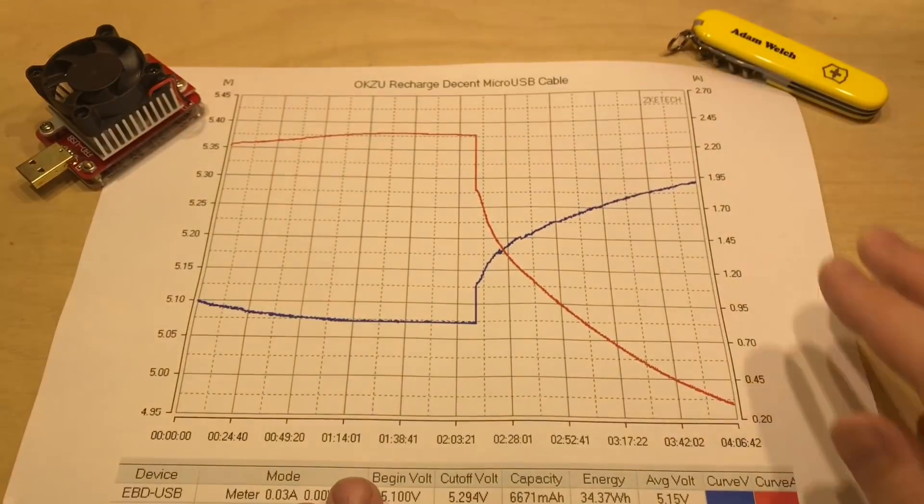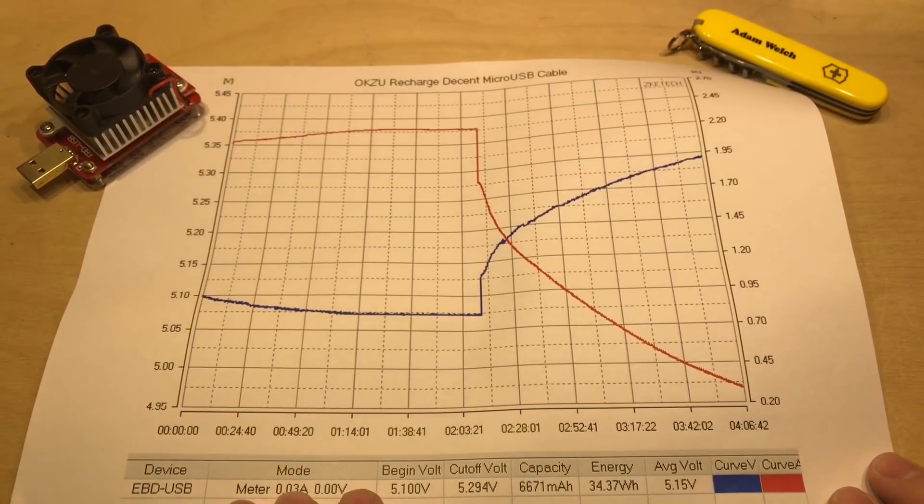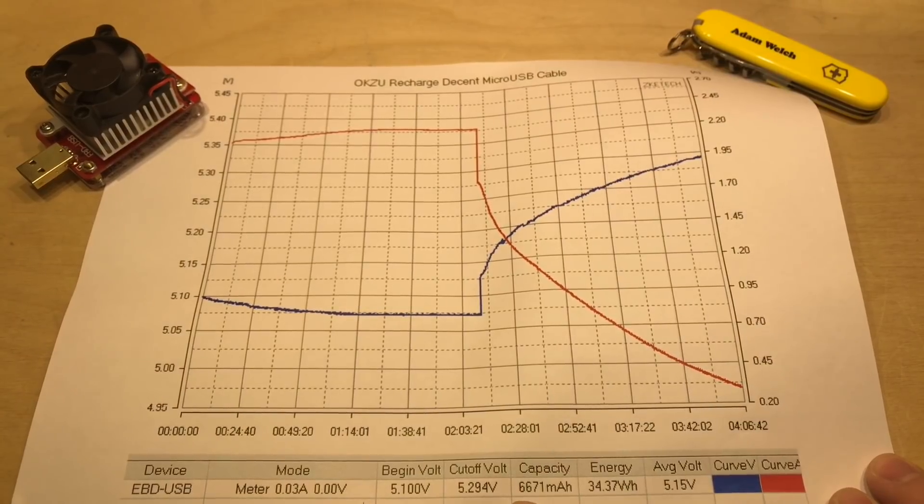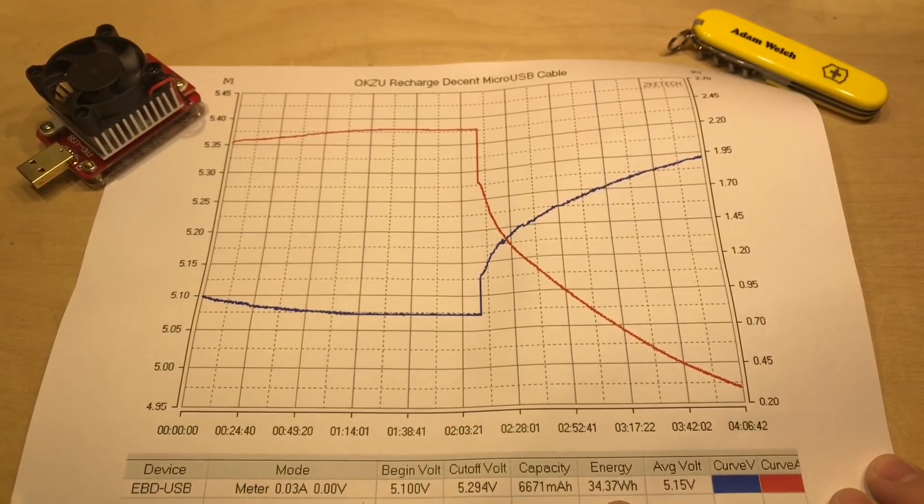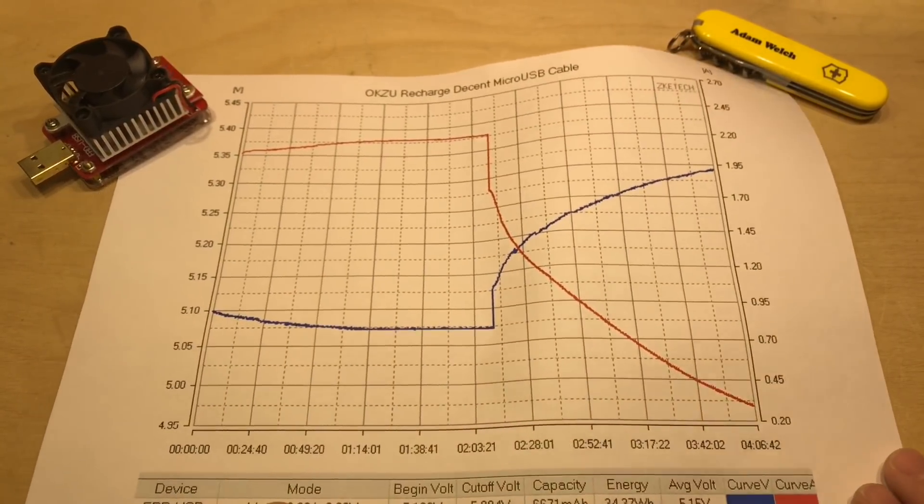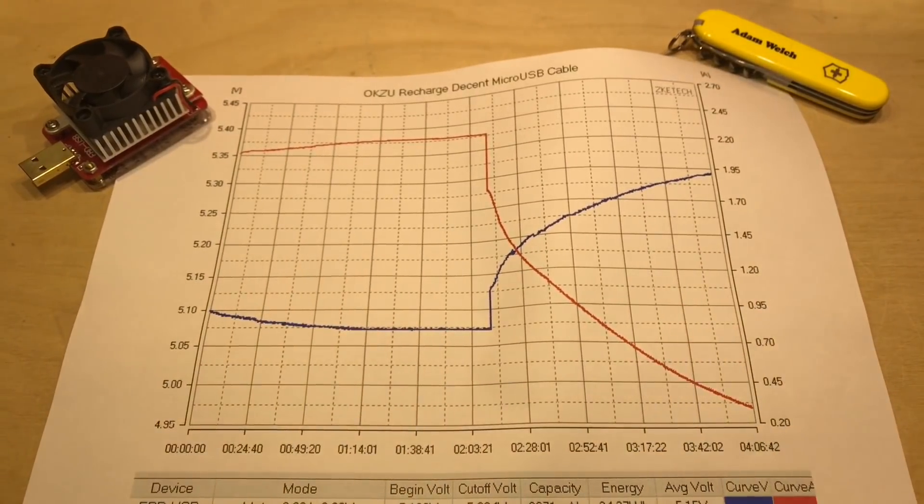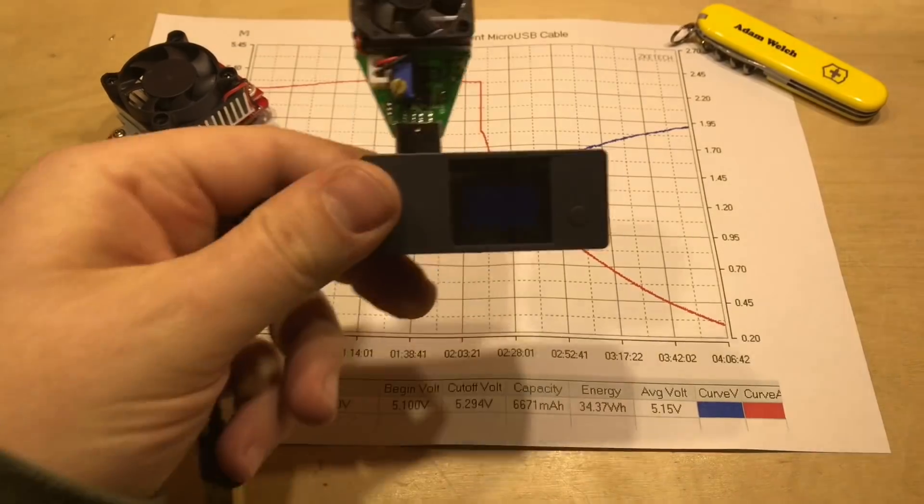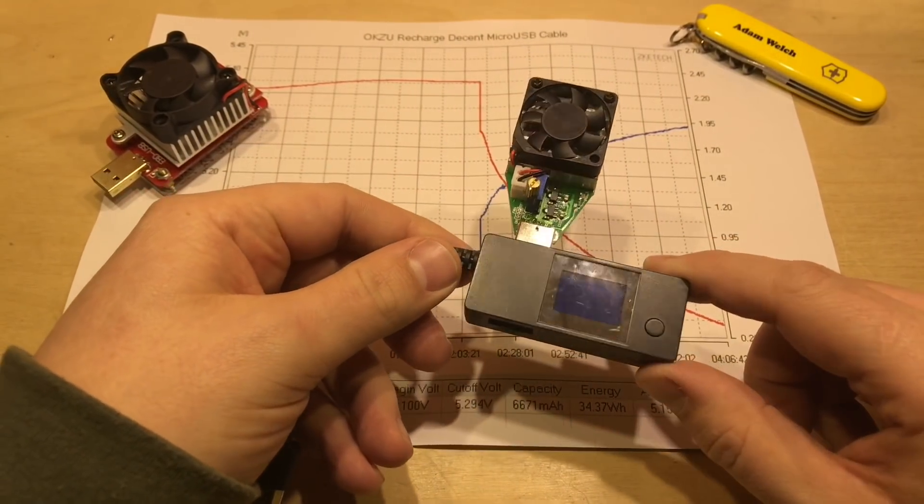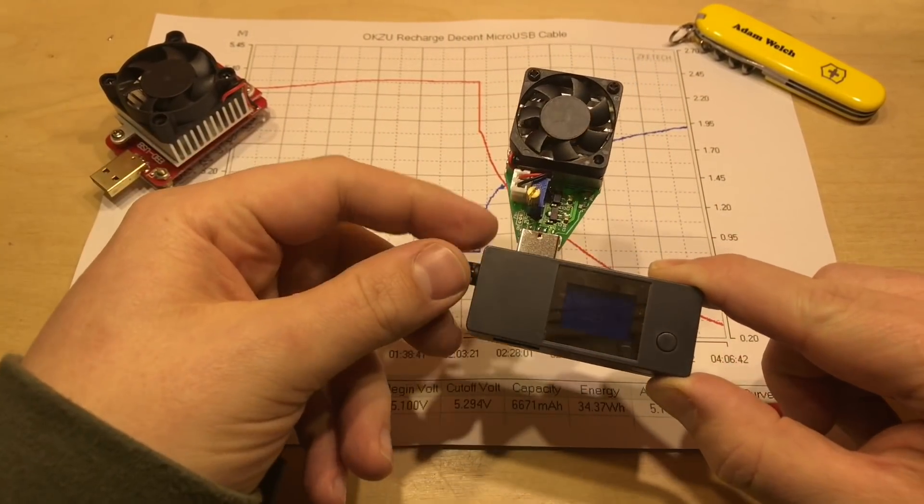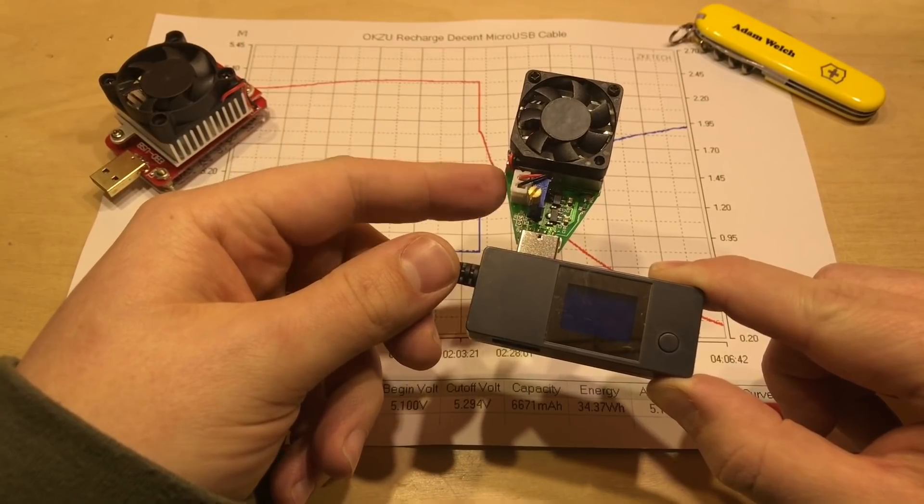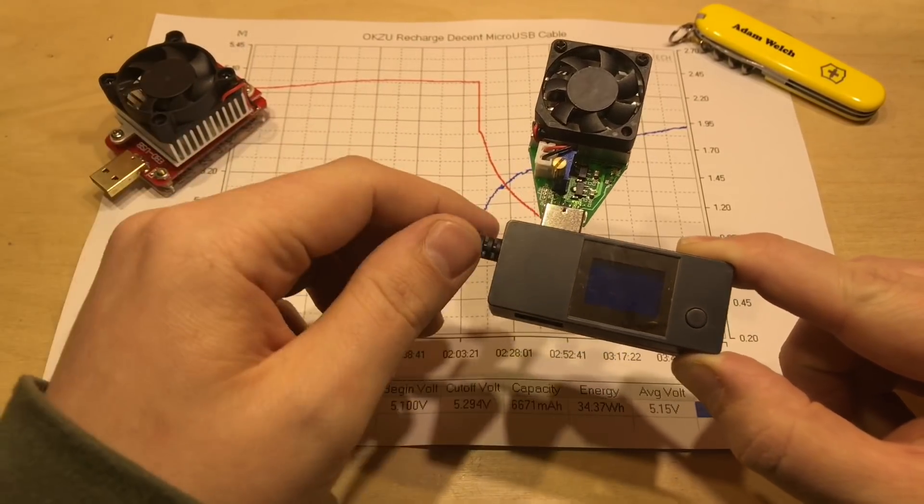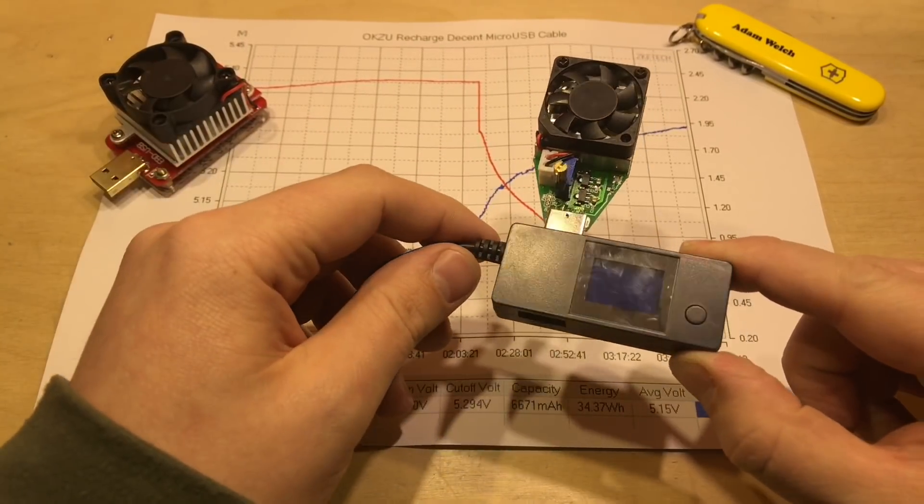Right down here at the bottom we can see the begin voltage, the cutoff voltage, the capacity, the energy that went into this power bank, that sort of thing, and we can see the actual curves. Therefore, for me, this is much better than this more perhaps traditional arrangement of a USB power monitor and an electronic load. This is essentially doing both jobs coupled up to a computer.